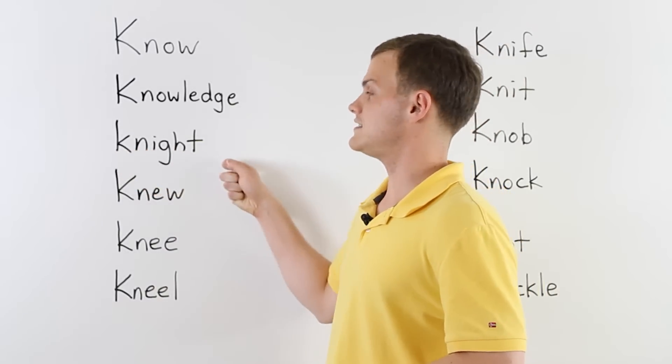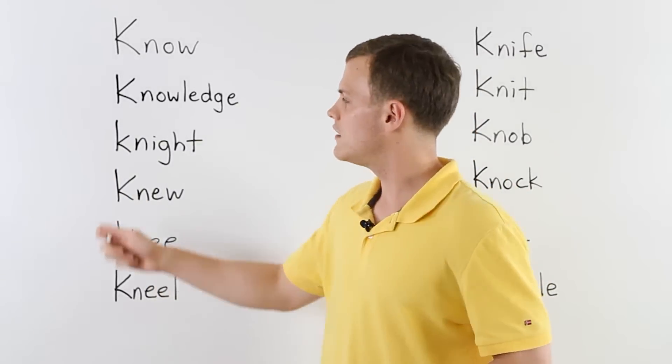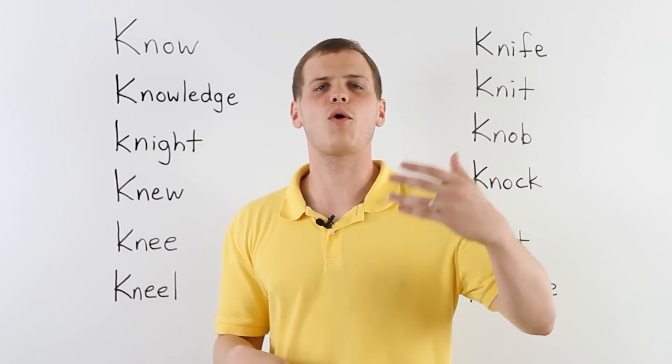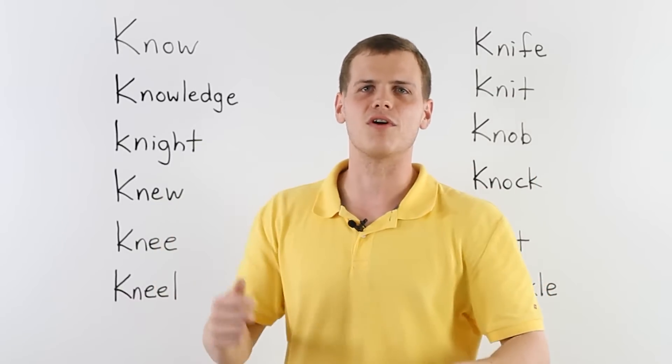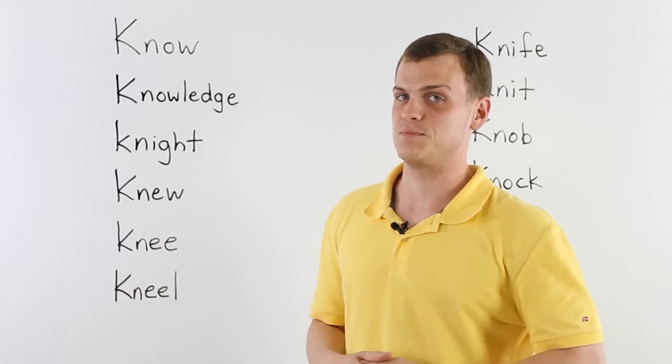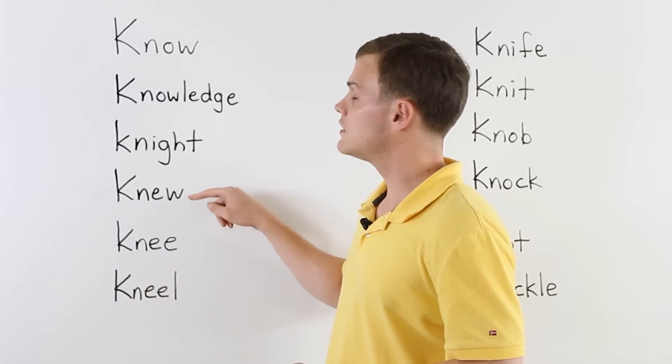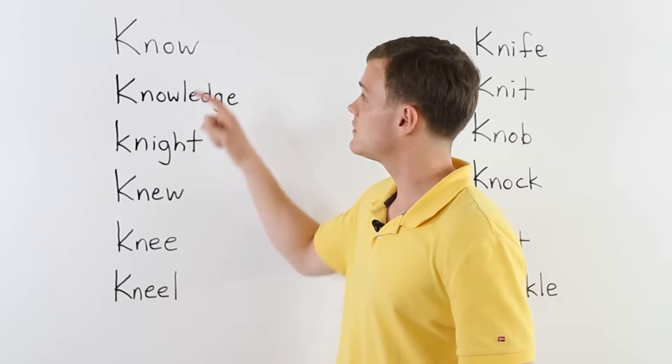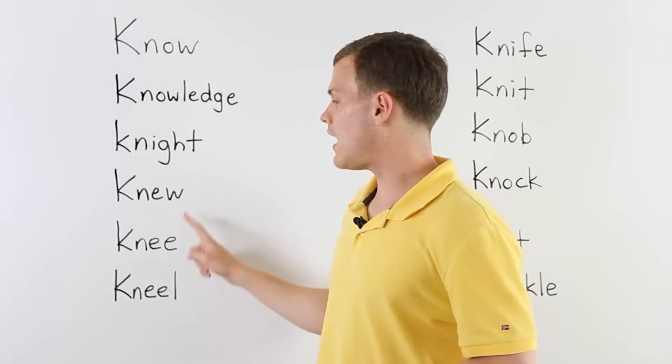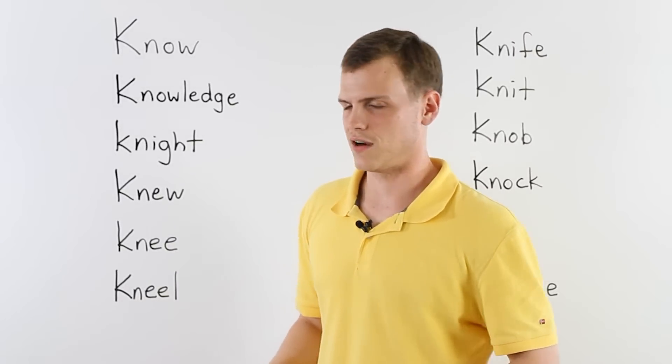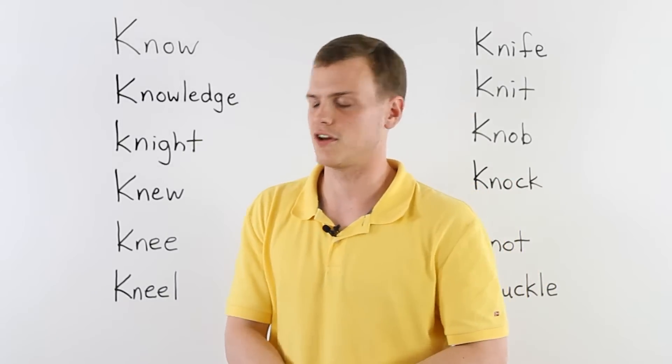Next, we have knight. Now, this is not nighttime. Like, oh, day is finished. It's nighttime. Now, if there's a K here, this is like the old style in England, like King Arthur and his knights and they wear the armor and fight with swords, that sort of thing. That's what that knight means. We also have this one here, knew. Knew is just the past tense of know. Like many years ago, I knew someone named Paul. That was in the past. I don't know him anymore, but I knew him many years ago.